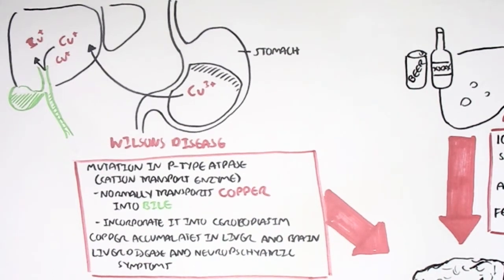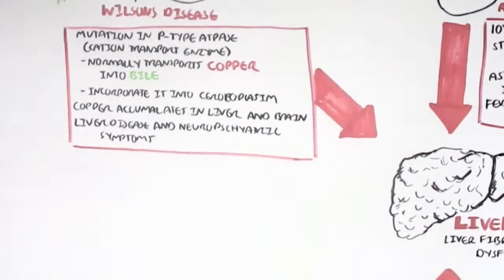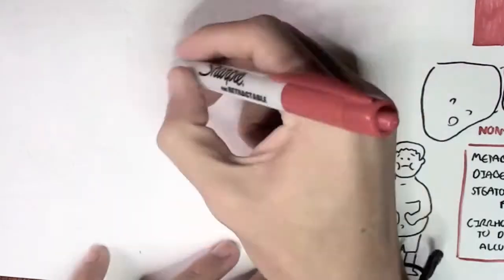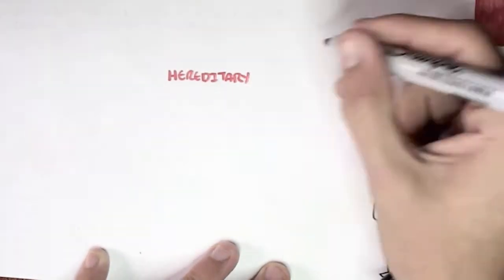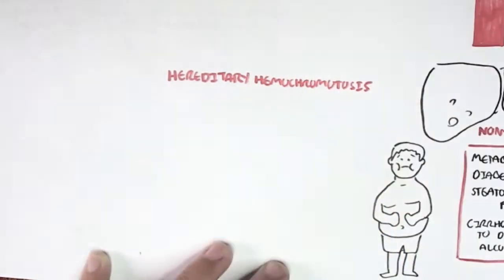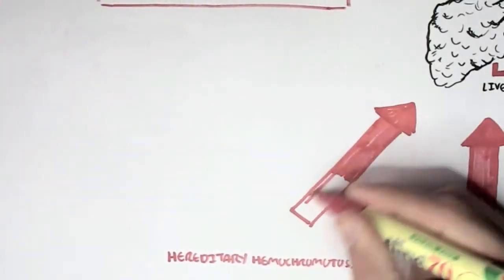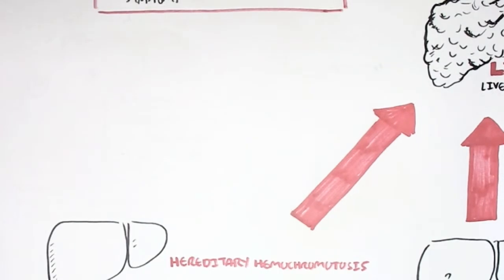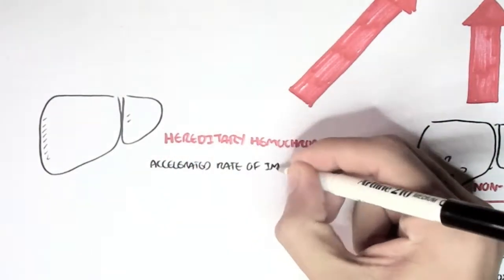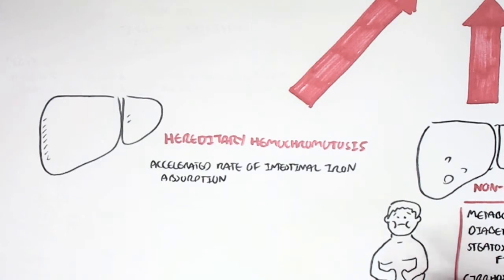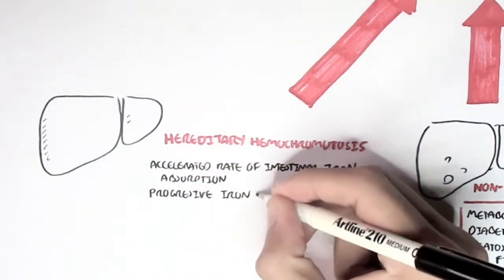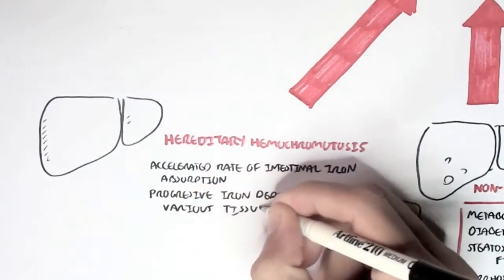This is also the case with iron accumulating in the liver. When we have too much iron in the body, in our liver, this is an example of hereditary hemochromatosis in which we have an accelerated rate of iron absorption from the intestines. With all this iron, we can have iron depositing everywhere in the body in different tissues including the liver.